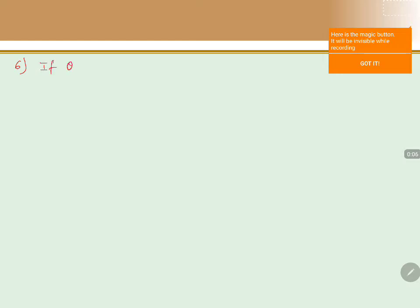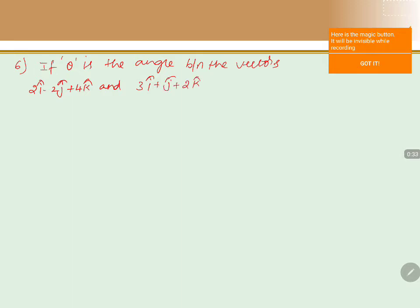We will discuss one problem. The question is: if theta is the angle between the vectors 2i cap minus 2j cap plus 4k cap and 3i cap plus j cap plus 2k cap, then sin theta is equals to?